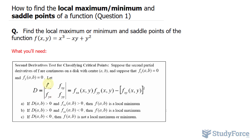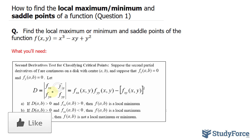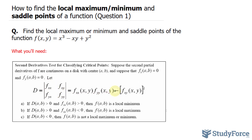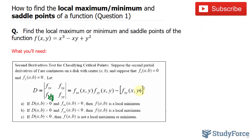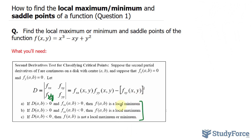You take this element, multiply it by this element, and then subtract by the product of the other two elements. That's shown right here: you multiply f_xx with f_yy, minus f_xy squared. Note: there is a typo — this should read f_xy rather than f_yx. So the first thing we have to do is find the critical points, and then we'll use this criteria to determine whether it's a local min or max.